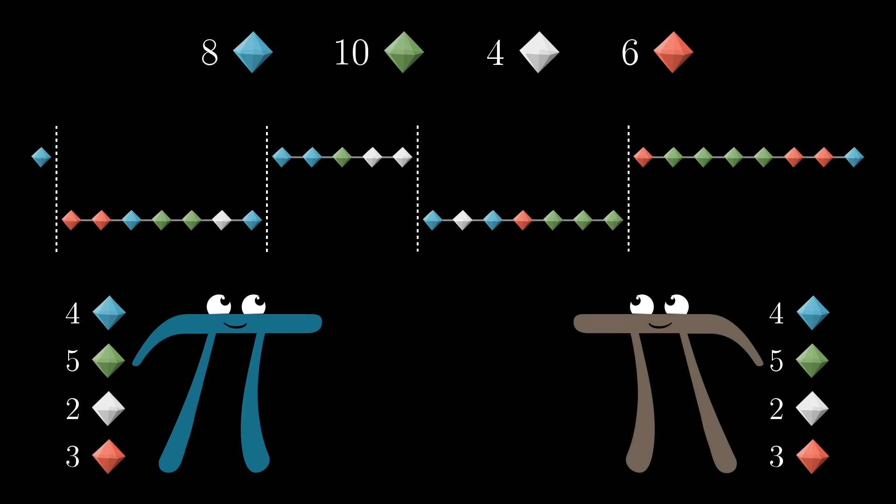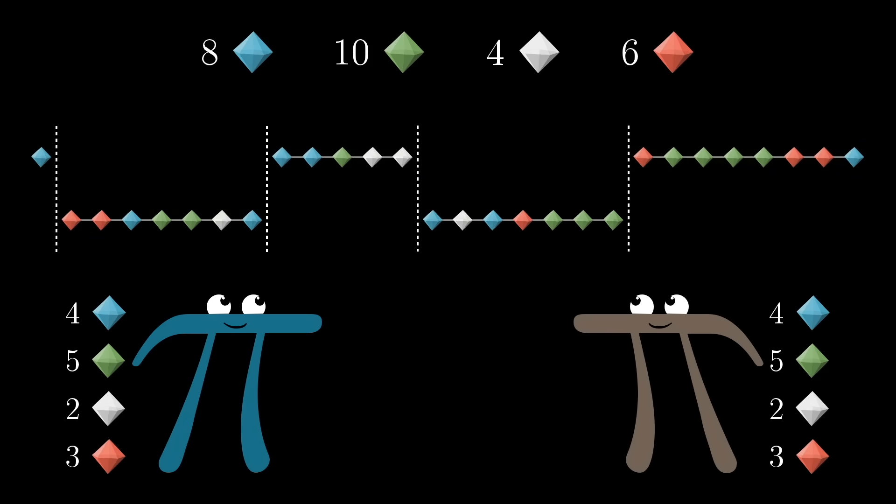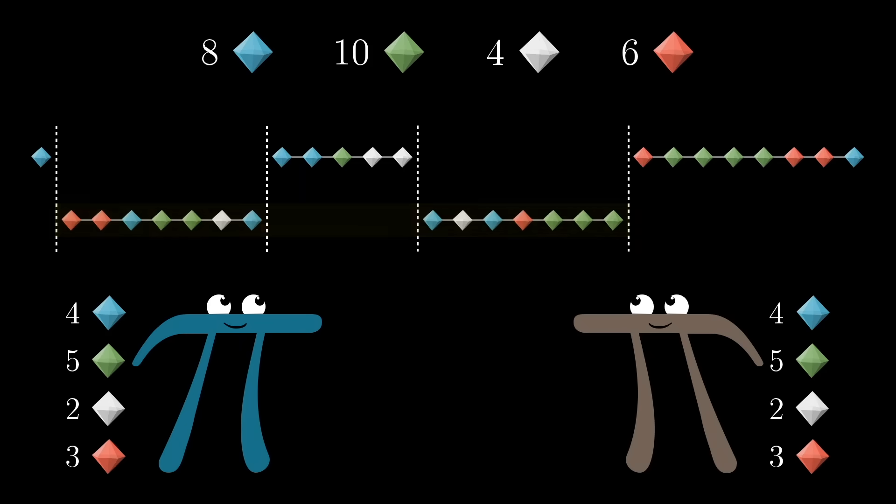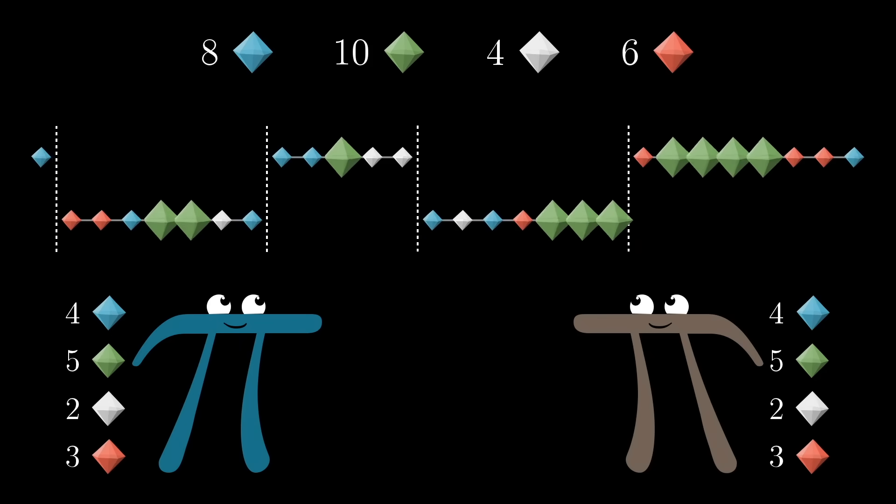For example, for the arrangement I'm showing here, I just did it with four cuts. If I give the top three strands to you, and these bottom two strands to your co-conspirator, each of you ends up with four sapphires, five emeralds, two diamonds, and three rubies.